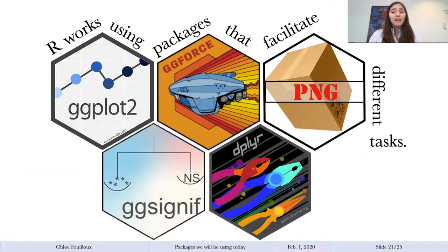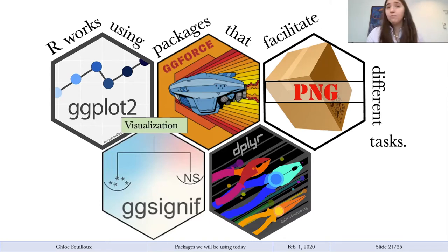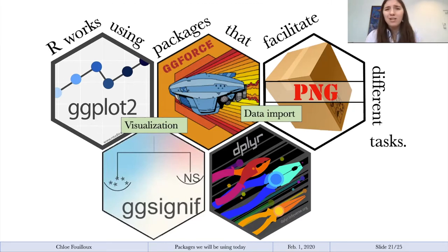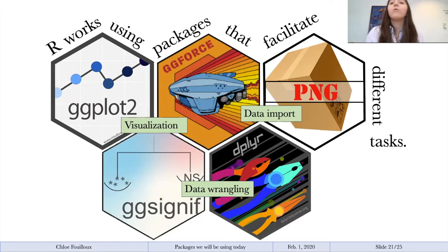R works using packages, and these packages facilitate different tasks. Some packages are really specific to data visualization, like ggplot and ggforce. Some are important for data import — importing images, dates and times. And some are about wrangling your data into the right shape, which prepares it to be graphed.